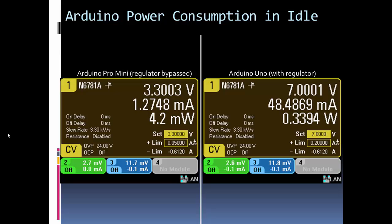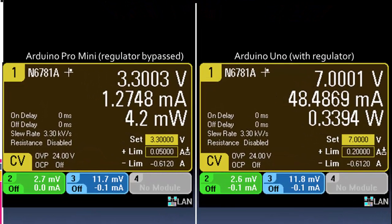Now if I use the sleep mode idle, which is one of the six sleep modes, we can see that the Pro Mini now drops to 4.2 milliwatts. So almost one-third of the power it was drawing before, and then the Arduino Uno just drops a little. It drops about tens of milliwatts.